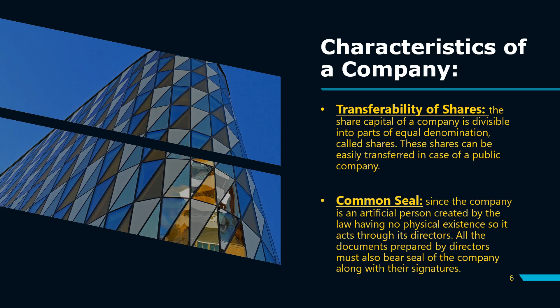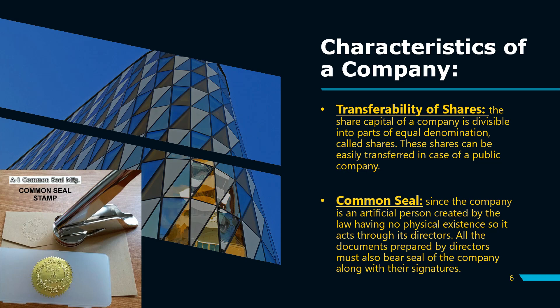The last characteristic is common seal. As a company is an artificial person, uski koi physical existence nahi hoti — haath, paon, muh, naak ye sab cheezein uski nahi hoti. So it cannot sign on its behalf. Isliye company ki jo bhi official documents hoti hain, usme company ki ek common seal hoti hai — essentially the company's signature, kyunki wo obviously apne haathon se sign nahi kar sakti.